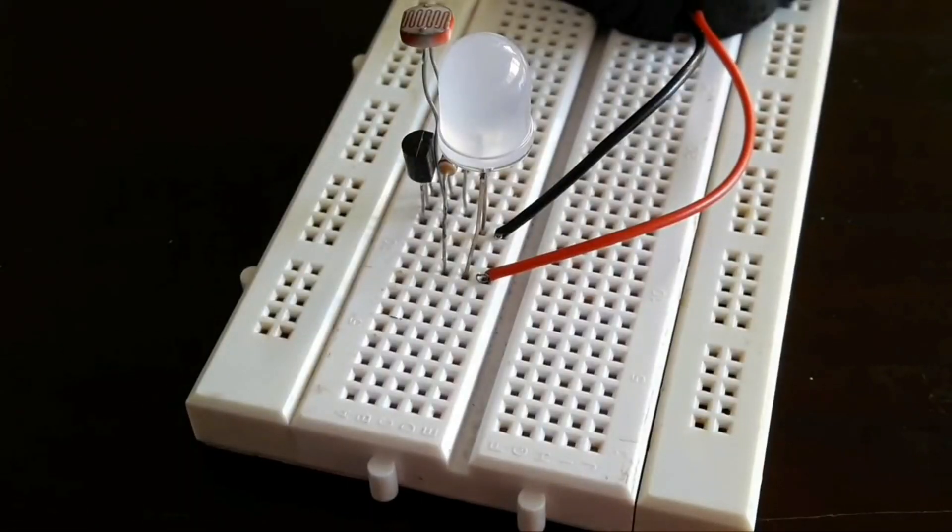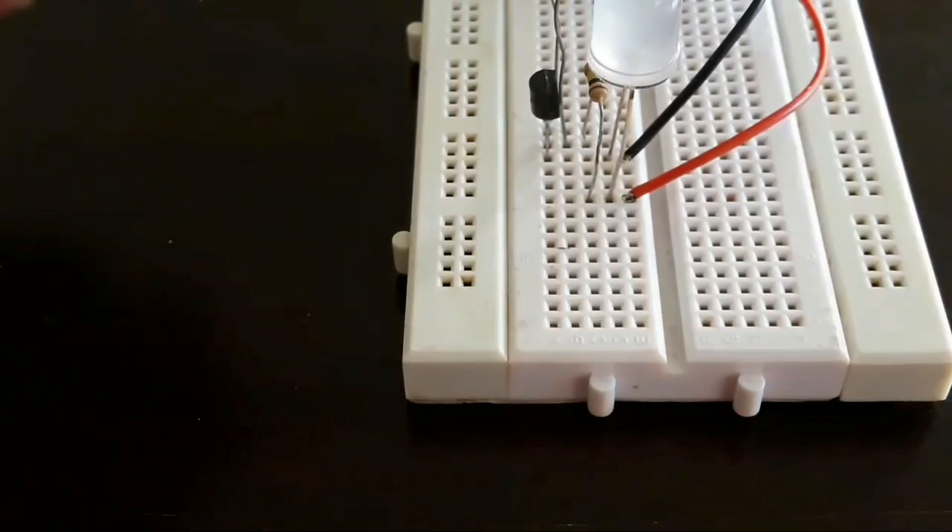Now connect the wire from the resistor to the positive side of the breadboard.